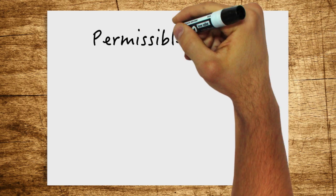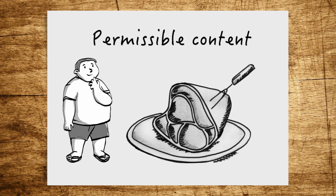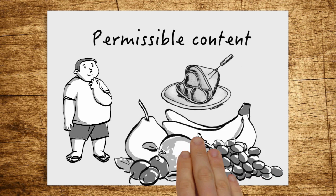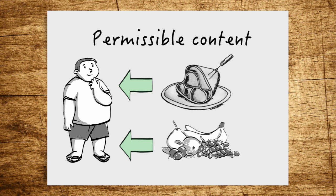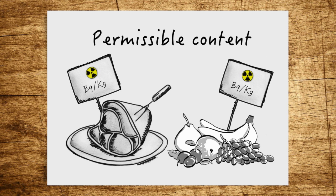To be able to define appropriate limits in Becquerels, assumptions are made about human behavior. For food limits, it is assumed that a person consumes a certain amount per year. This amount is generally significantly higher than what we actually consume. Thus, the limits are so low that the intake of radioactive material can only lead to a negligibly low radiation dose.